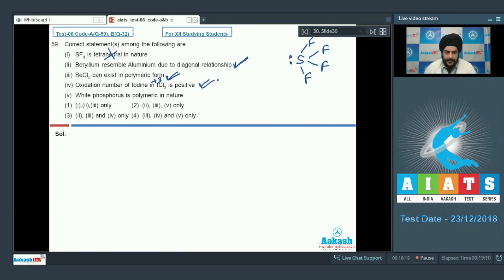Statement 5: white phosphorus is polymeric in nature - this is incorrect. White phosphorus exists as discrete P4 units. Statements 2, 3, and 4 are correct, which is given in option 3.